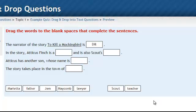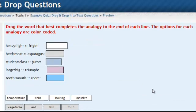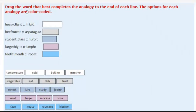Another example of a drag and drop text question is like the one in front of you here. It says drag the word that best completes the analogy to the end of each line. The options for each analogy are color-coded. So notice the white code here goes with the white words, and the gray, and the blue, and the purple, and so on. So you can color-code them and have multiple items in one question, but have them sorted out so they just drag their information up.